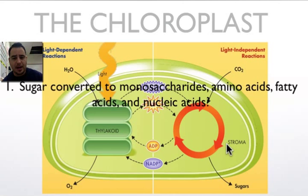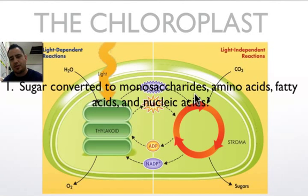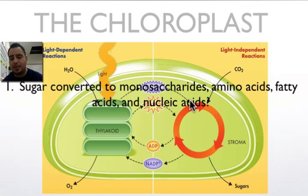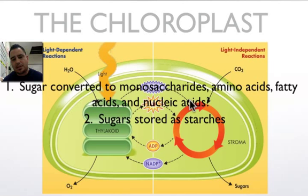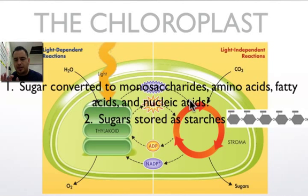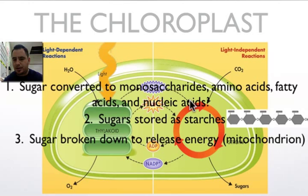So what happens to the sugars produced? The Calvin cycle occurs in the stroma and produces sugars that can be used in many ways. We can make monosaccharides like glucose and fructose, convert them to amino acids to build proteins for plant structure, build lipids and fatty acids for cell membranes, make nucleic acids like DNA for cell division through mitosis, or store sugar as starch — a polysaccharide made of combined glucose molecules. When energy is needed, starch can be broken apart into glucose monomers, or glucose can be broken down directly in the mitochondria to release energy quickly.